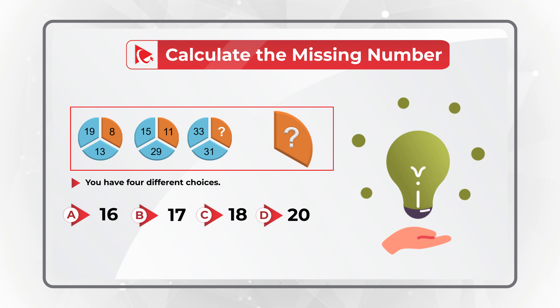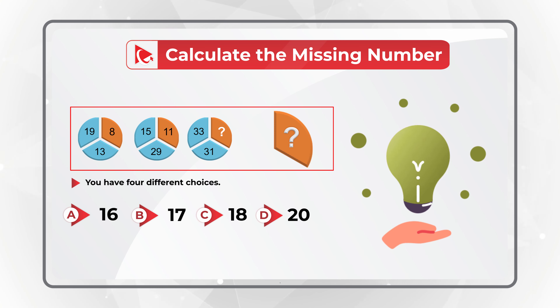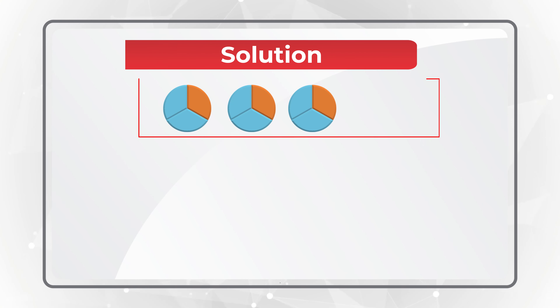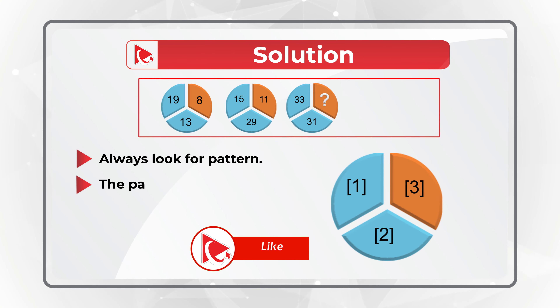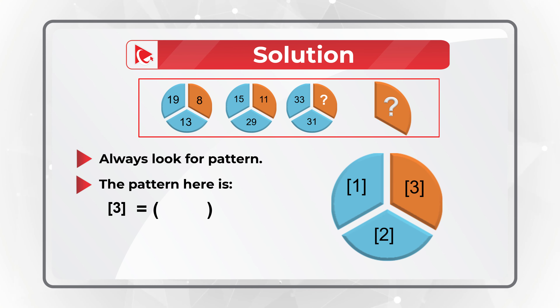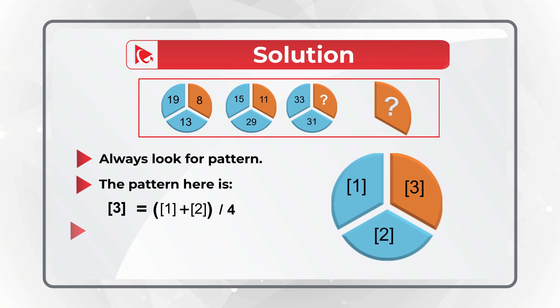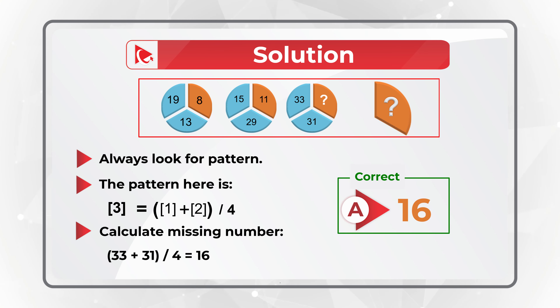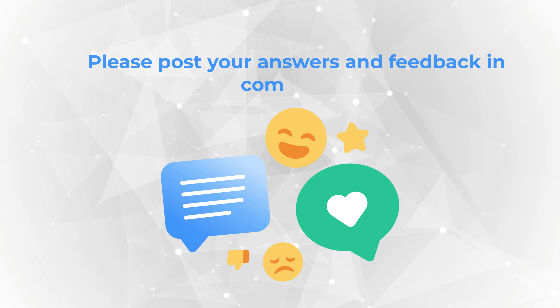Did you calculate the right answer? The solution to this problem is really interesting. You need to always look for patterns. The pattern here is that section 3 of the circle is calculated as sections 1 plus 2 divided by 4. So to calculate the missing number, you add 33 plus 31, then divide the sum by 4, and you get 16. Hopefully you've enjoyed this tricky question and now know how to answer similar problems on the test.